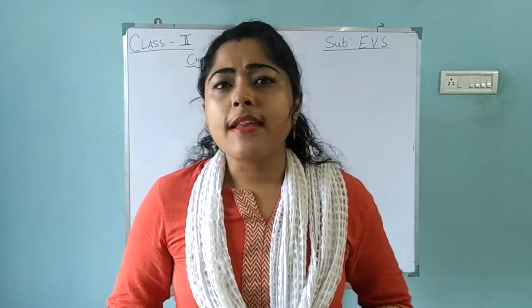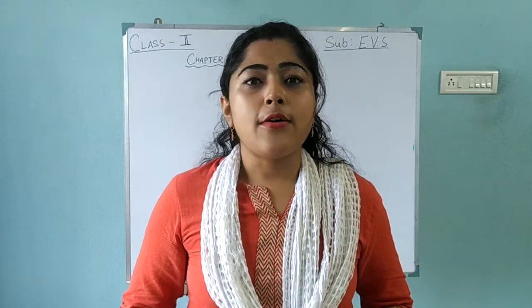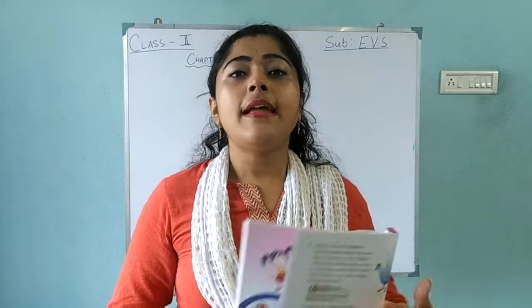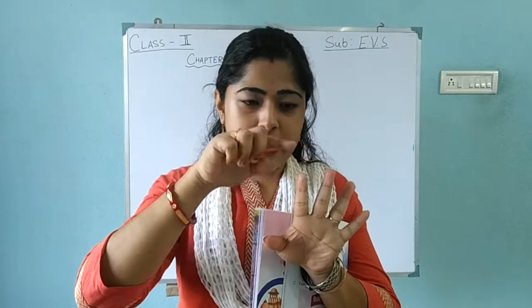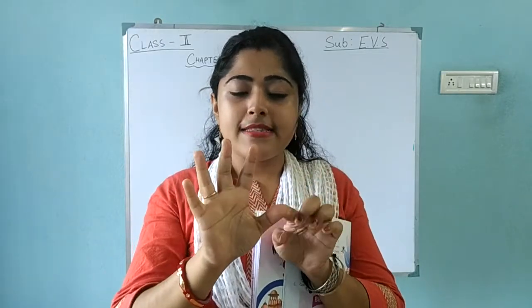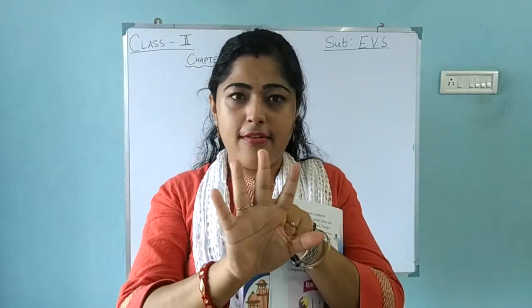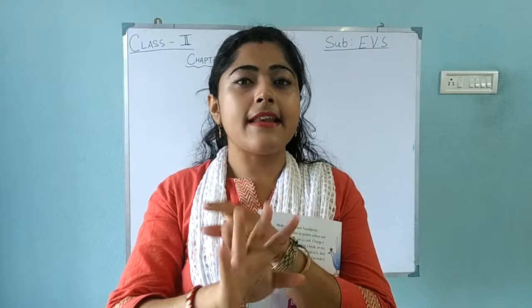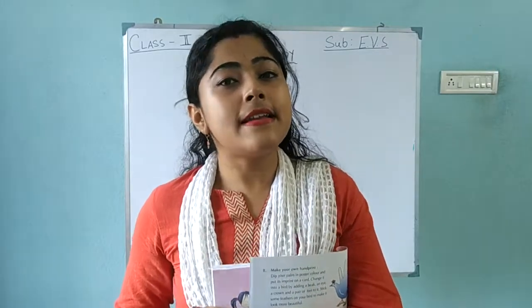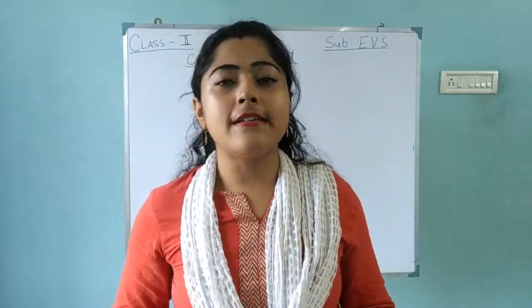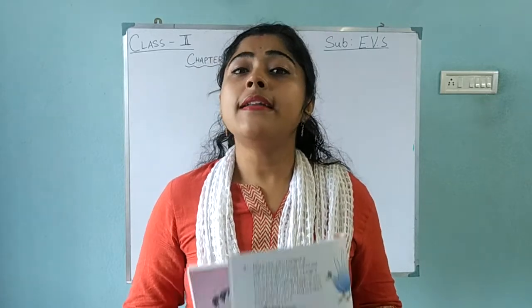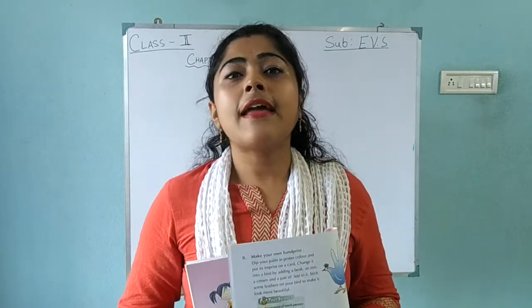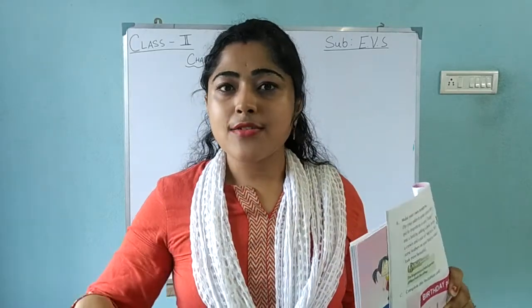Now, how many fingers do you have? You have 10 little fingers. Look: 1, 2, 3, 4, 5, 6, 7, 8, 9, 10. You have 10 little fingers. And how many toes do you have? You have 10 little toes. You can count at your leg — 10 little toes.